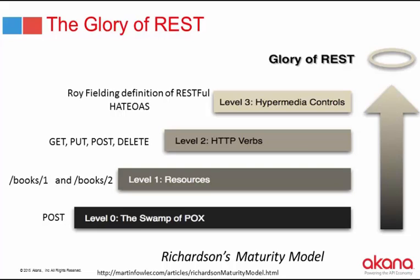The first level of the maturity model is the Swamp of POX — Plain Old XML. You can consider this your SOAP: XML SOAP requests, POSTs, very basic. The second level is where you start to introduce resources. At level one you're still using really only one method, like a POST.